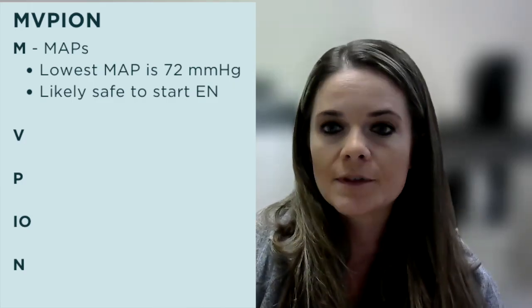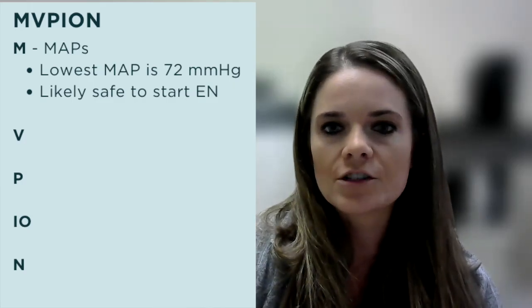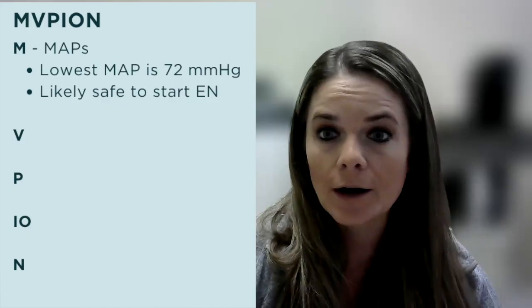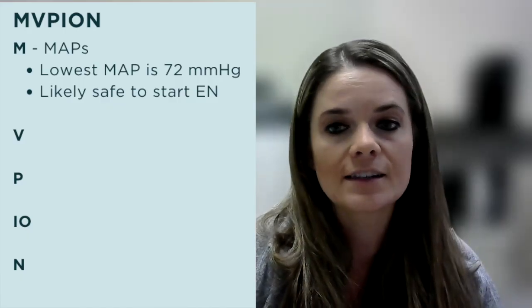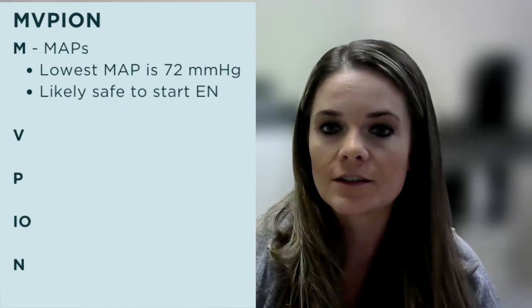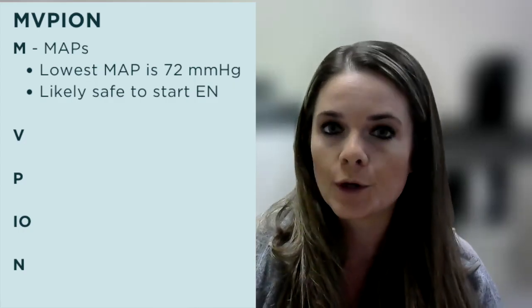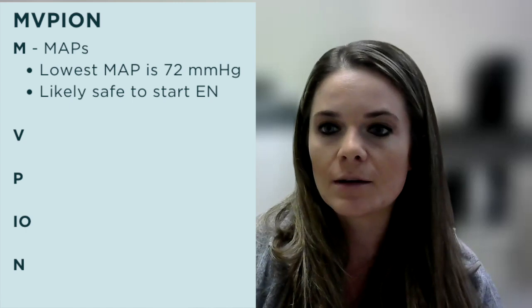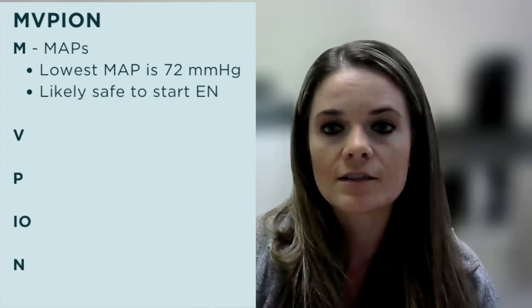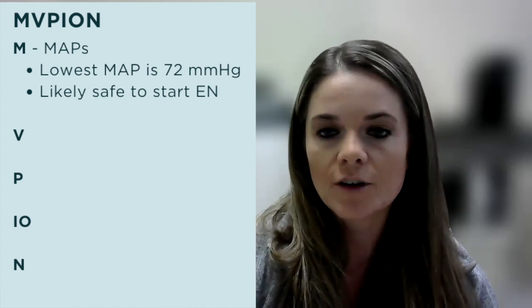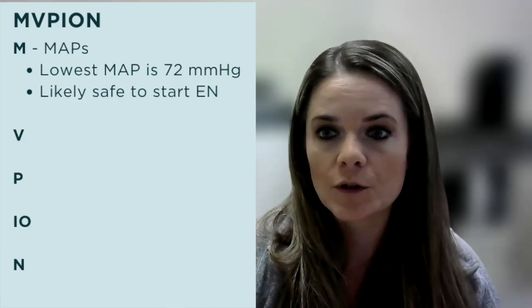It can be helpful to use the acronym MVPION to guide your decision-making when evaluating a critically ill patient for tube feeding recommendations. The M stands for MAPs — you look at the ICU flow sheet to trend the patient's MAPs over 12 to 24 hours. MAPs consistently less than 50 would be a red flag for starting tube feeding. You notice that the lowest MAP for Mr. Smith over the last 24 hours is 72, meaning you can likely safely start enteral nutrition as his GI tract is being well perfused.